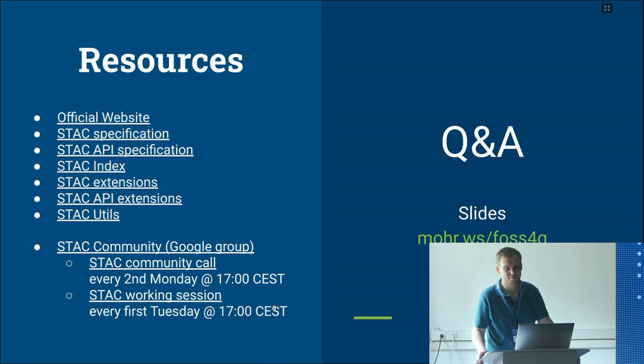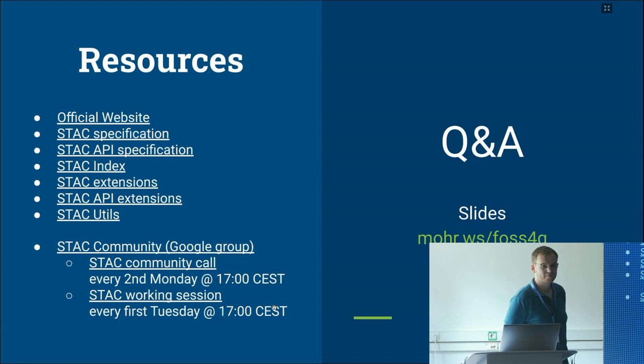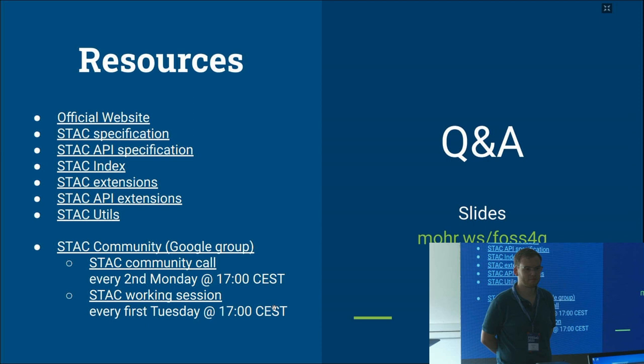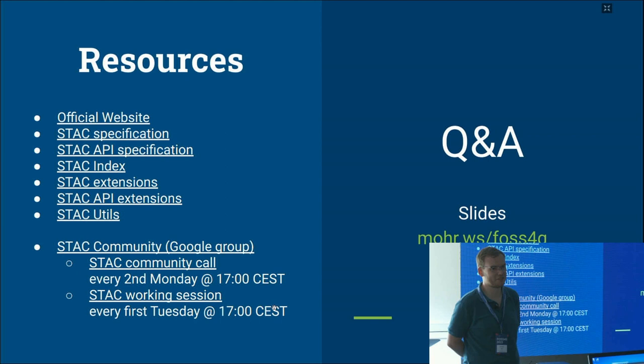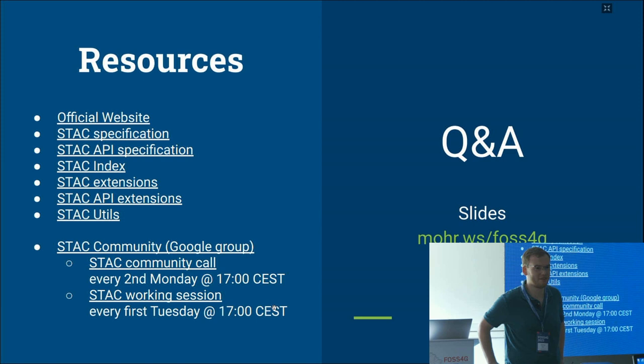Q&A: A question was asked about whether static catalogs are still relevant given the move toward APIs. The answer: yes, for sure. If it's a small catalog, many from Planet for example are still static — you can just browse through. If it gets into thousands of files you may want to add search, but static STAC is still supported by clients and software.